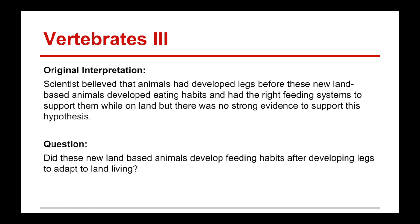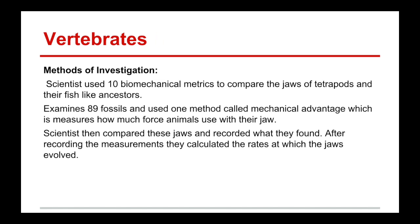The question that we ask ourselves is: did these land-based animals develop feeding habits after developing legs to adapt to land living? In the paper, some methods of investigation that the scientists used were biomechanical metrics that compared the jaws of tetrapods to their fish-like ancestors. They examined 89 fossils from around the world and used one method called mechanical advantage — the measurement of how much force an animal uses for their jaw. Scientists compared these jaws, recorded their findings, and calculated the rates at which the jaws evolved.